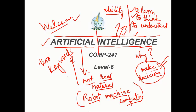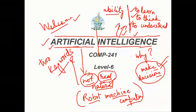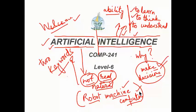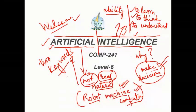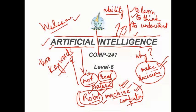Let's begin with the word itself: artificial intelligence. There are two keywords inside. The first is 'artificial,' which means not natural, not real. So what can it be? It can be a machine, a computer — because machines and computers are made by humans, that's why they are artificial. We can also think about robots; they are also artificial, not real. So in this course we are talking about robots, machines, and computers.